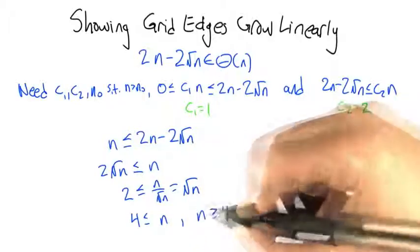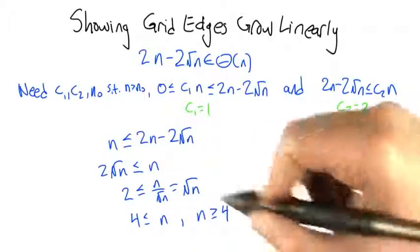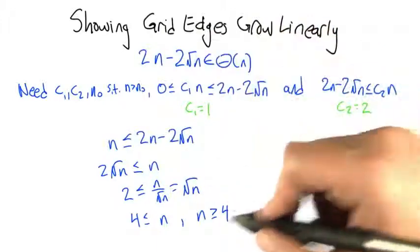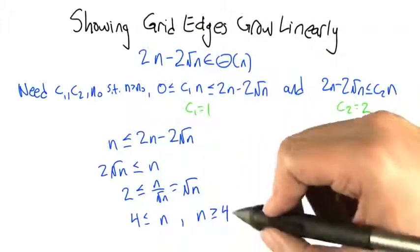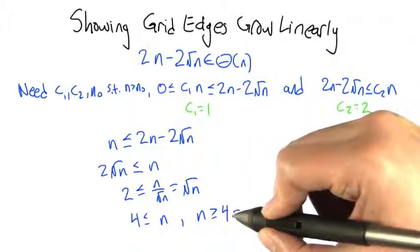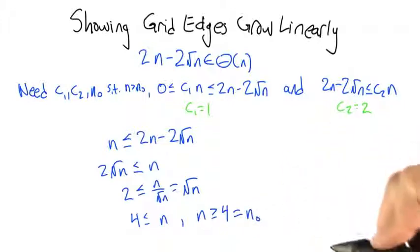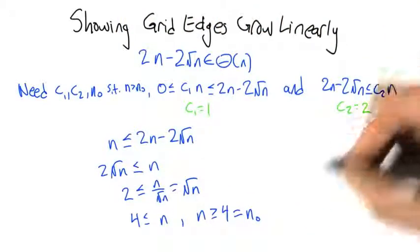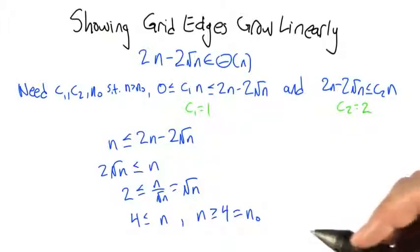Flipping that around the other way, if n is bigger than or equal to 4, then this is true. That means we have to throw away the smaller values of n, and we can do that very simply by setting n0 to 4, because this only has to hold for n that are bigger than n0, and that's what we've got there.